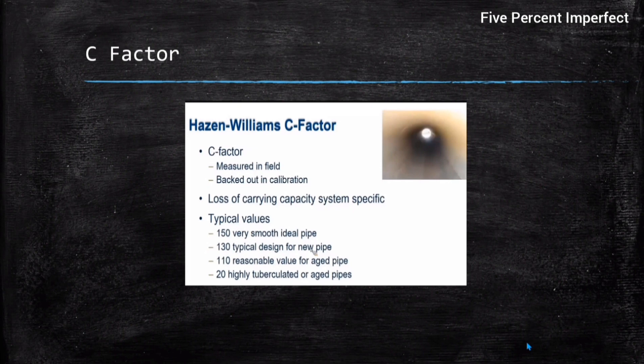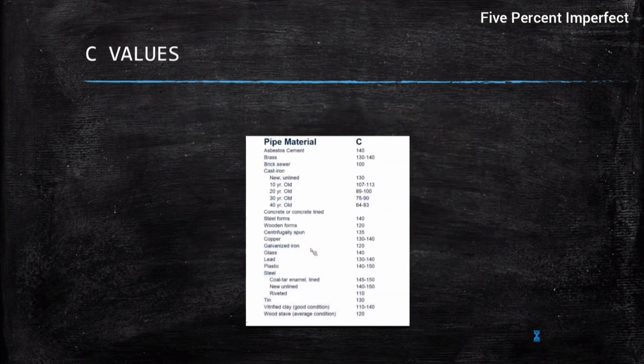Corrosion or loss of carrying capacity due to various reasons will change the C values. Typical C values are 150 for a smooth ideal pipe, 130 for a typical new pipe design. For various pipe materials: asbestos is 140, steel is 140, concrete is around that range, tin is 130, and so on — with various C values available for different pipe materials.